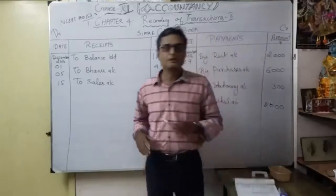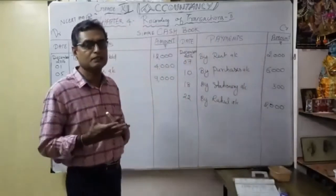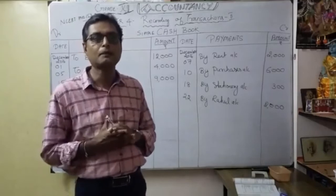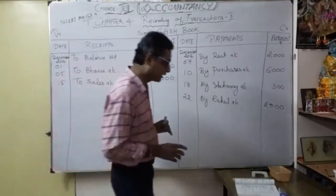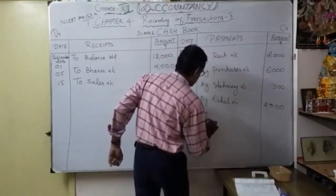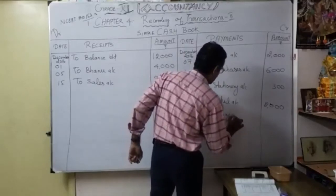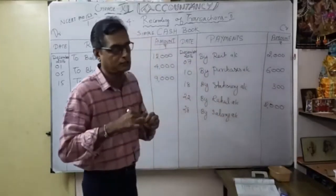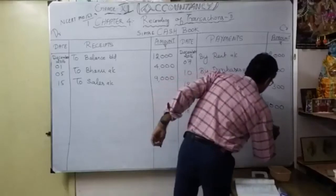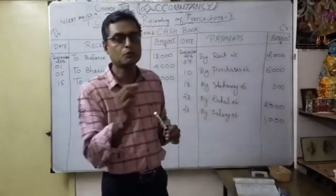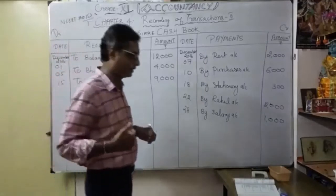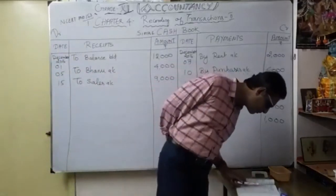Next: December 28th — paid salary 1000. Entry: salary account debit to cash account. Salary is a nominal account — debit all expenses and losses. So date is 28 — payment side: 'By salary account' 1000. In the salary account: 'To cash account 1000.' Next: December 30th — paid rent 500. Entry: rent account debit to cash account. Date is December 30 — payment side: 'By rent account' 500.